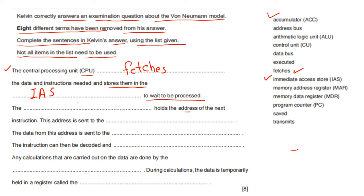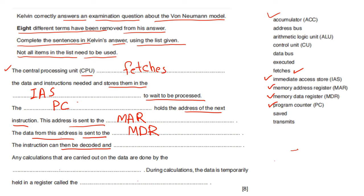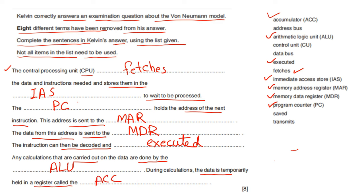The PC holds the address of the next instruction. The address is sent to MAR (memory address register), and the data from this address is sent to MDR (memory data register). The instruction can then be decoded and executed. Any calculations required are done by the ALU (arithmetic logic unit). During the calculation, data is temporarily held in a register called ACC (accumulator register).